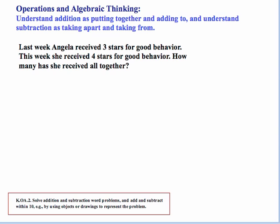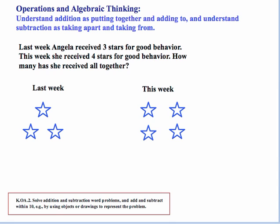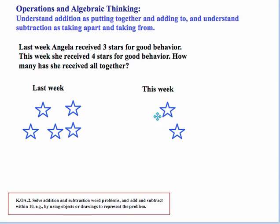Let's try this problem. Last week Angela received three stars for good behavior. This week she received four stars for good behavior. How many has she received altogether? You would want some type of manipulatives — some kind of little stars, cutouts or whatever you can come up with. So students will start with one, two, three from last week, and then four, five, six, and the last one to count would be seven. So they know altogether that Angela got seven stars for good behavior.